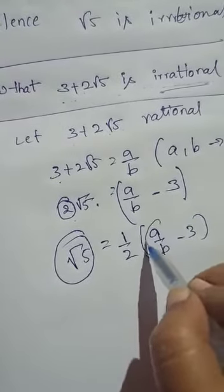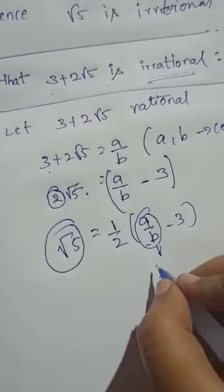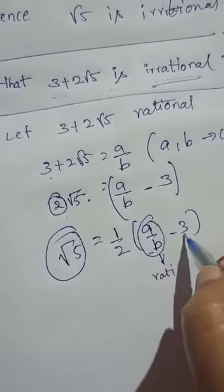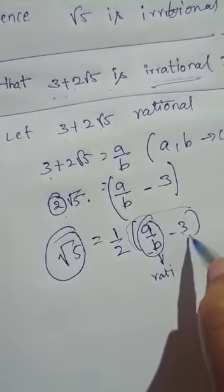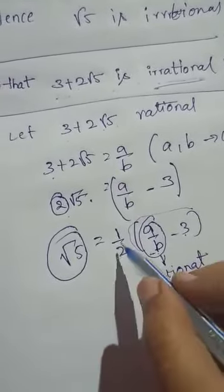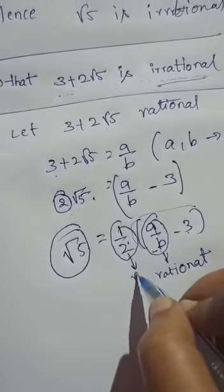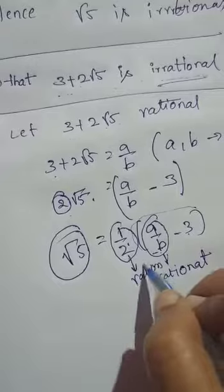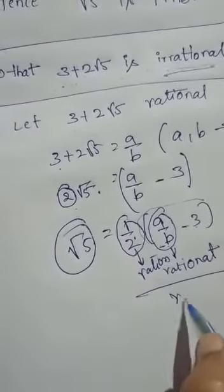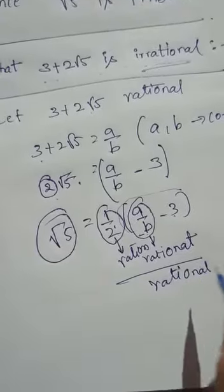a/b is rational. a/b minus 3 in bracket, this is rational. 1/2 is also rational, so the entire part is rational. Rational means we can write it in the form of p by q.